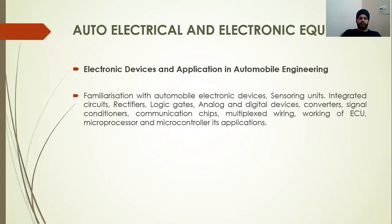The ECU controls every parameter of a vehicle today. All parameters of a vehicle — speed, power, and different parameters — are controlled by the ECU. That is a key component of an automotive vehicle. Other electronic components include wiring, multi-processor, microcontroller, communication chip, semiconductor, rectifier, and transistor.